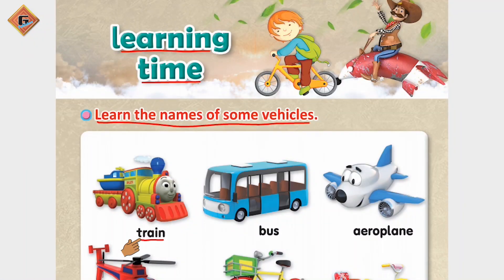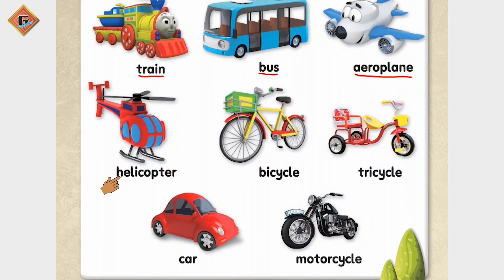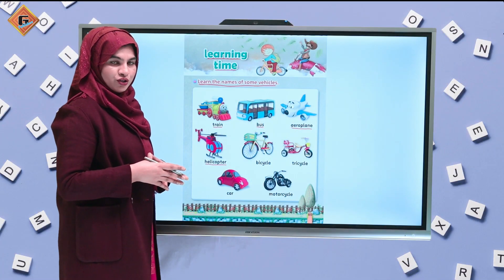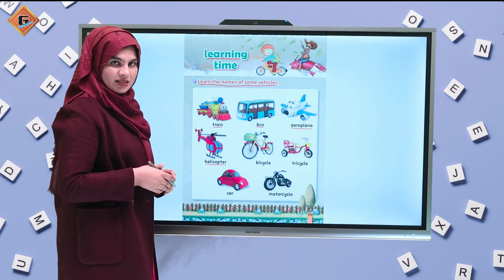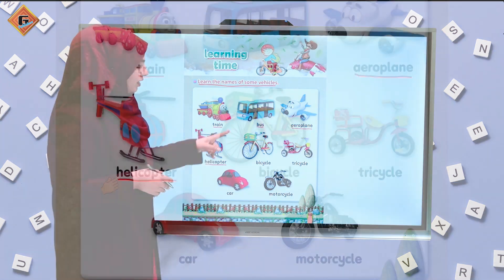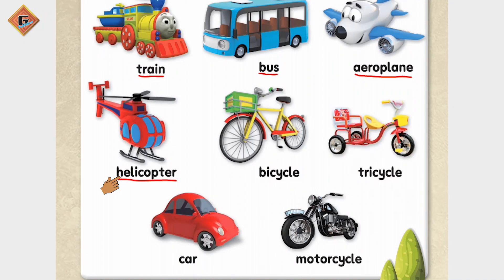Next one is bus — bus. And the next one is aeroplane — aeroplane. Aeroplane flies in the air. The next one is helicopter — helicopter also flies in the air. So aeroplane and helicopter are air transport.